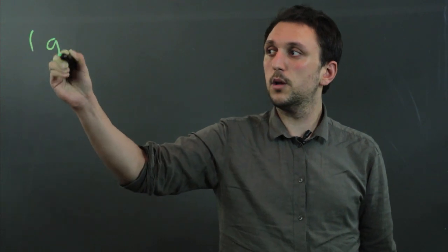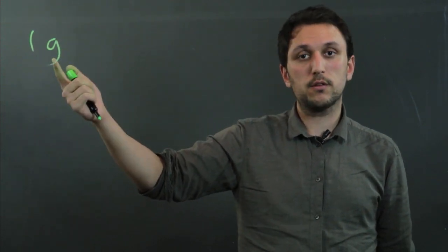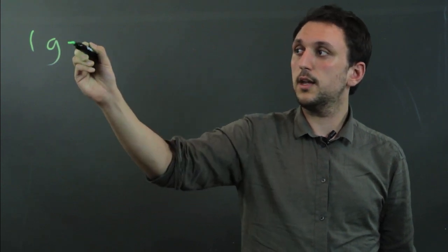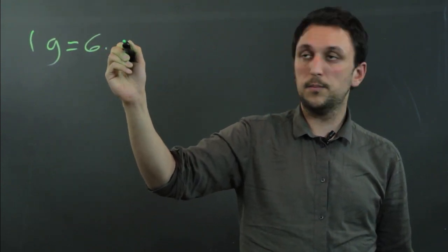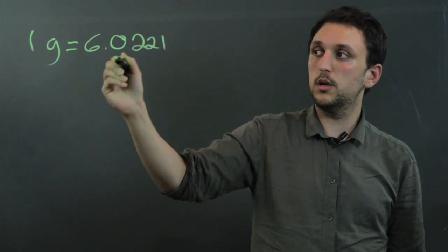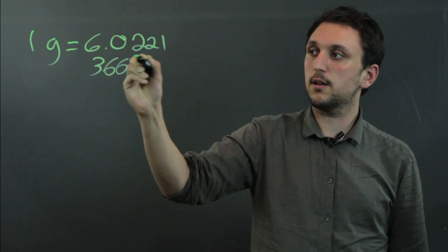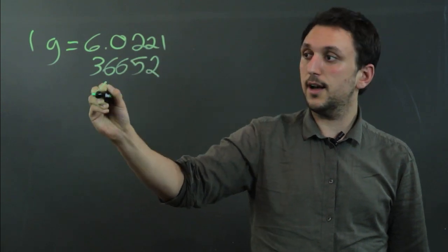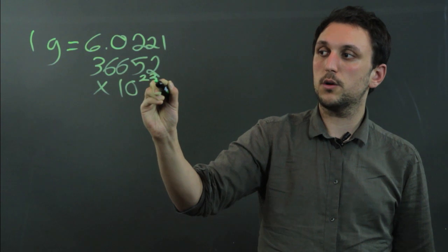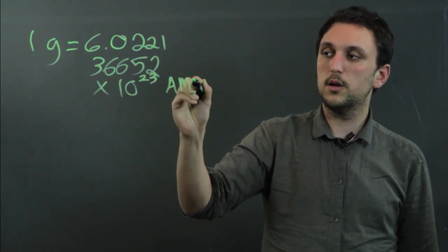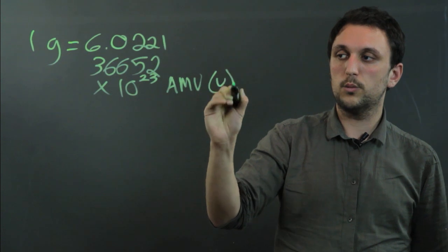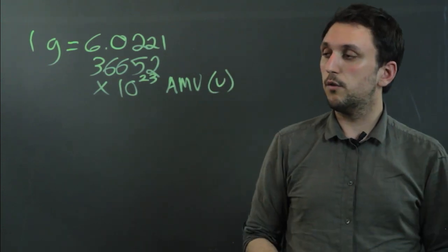Now, 1 gram, which is a measurement of mass in the metric system, equals 6.022136652 times 10 to the 23rd AMU, or we'll use just U for the measurement.